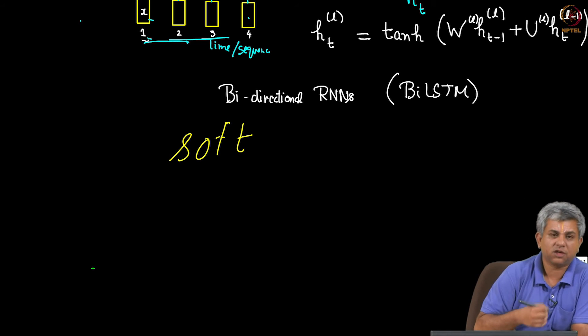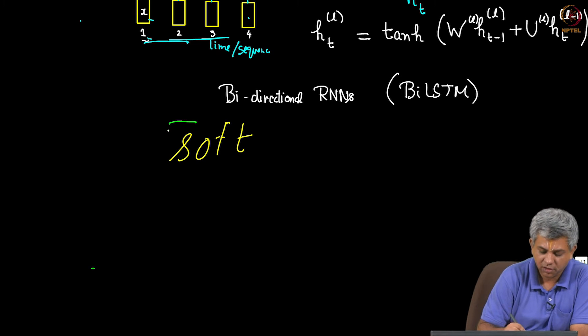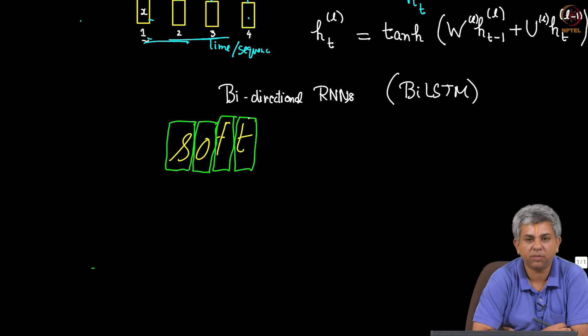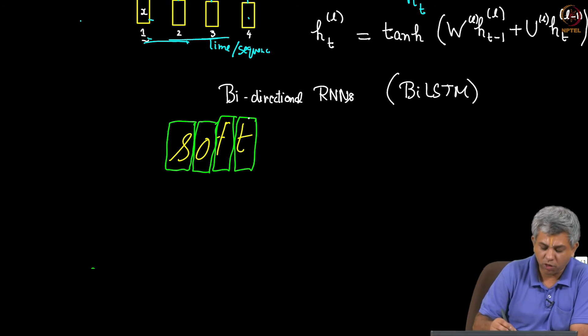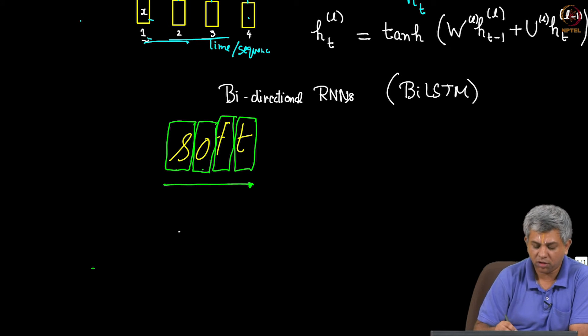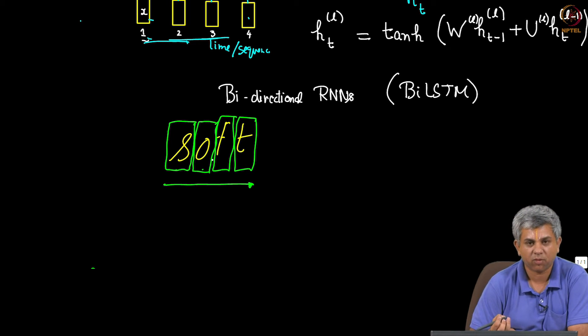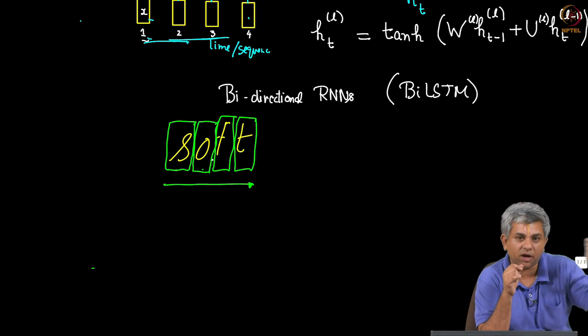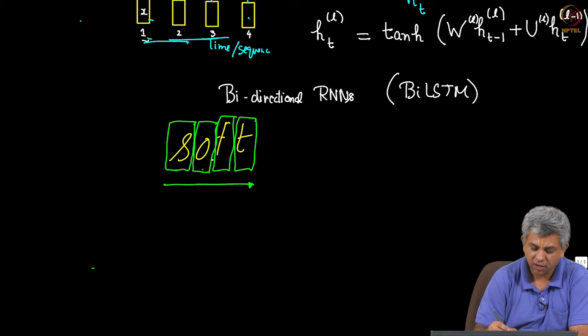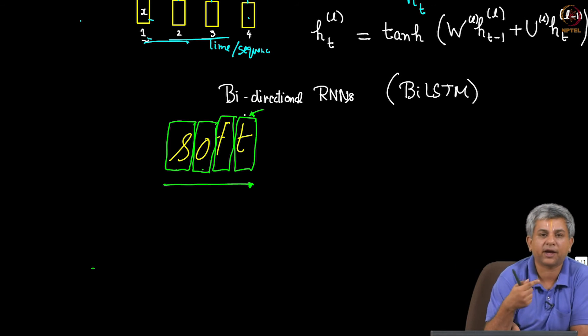Now suppose the way usually RNNs will do it is this will be input 1, this image will be input 2, this image will be input 3 and this image will be input 4. Now suppose I go only in one direction, it will read S, it will read O and it will not know whether this letter is T or whether it is F. So the probability of this will actually not be known because you are only seeing that particular letter and the past letters. Now however as a human being if you see and identify this letter as T very clearly you can actually go back and correct yourself.